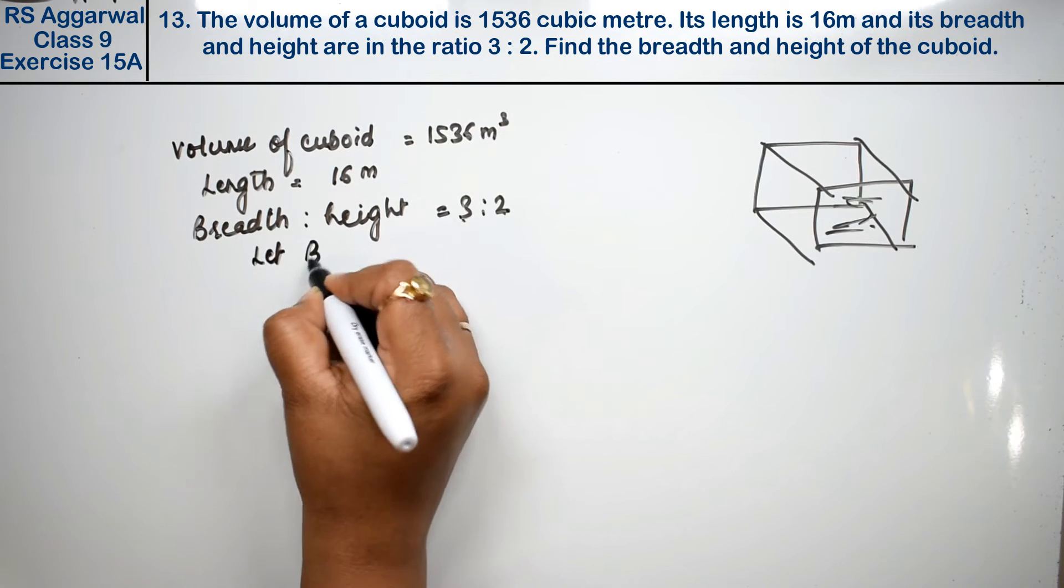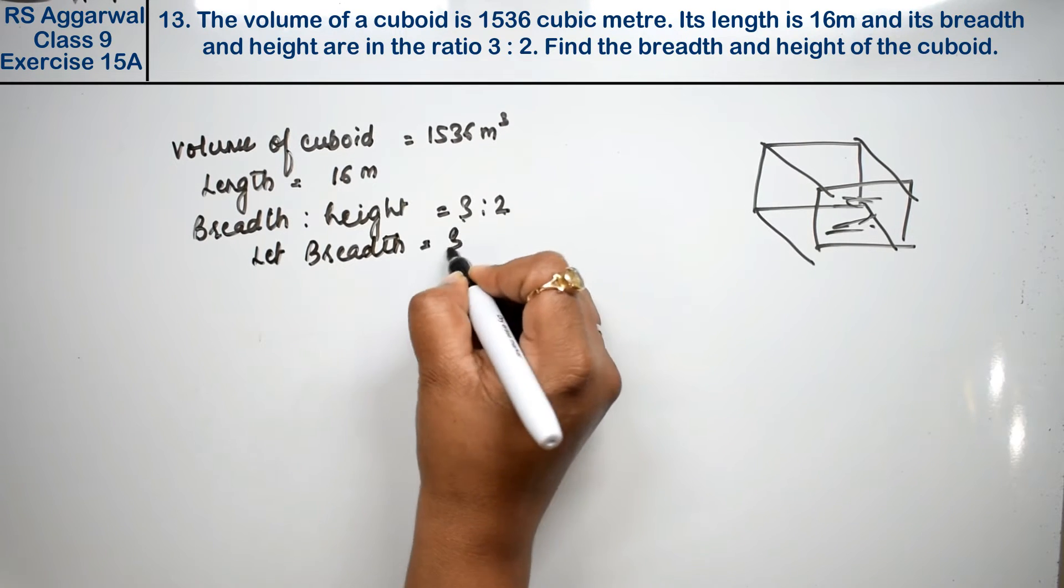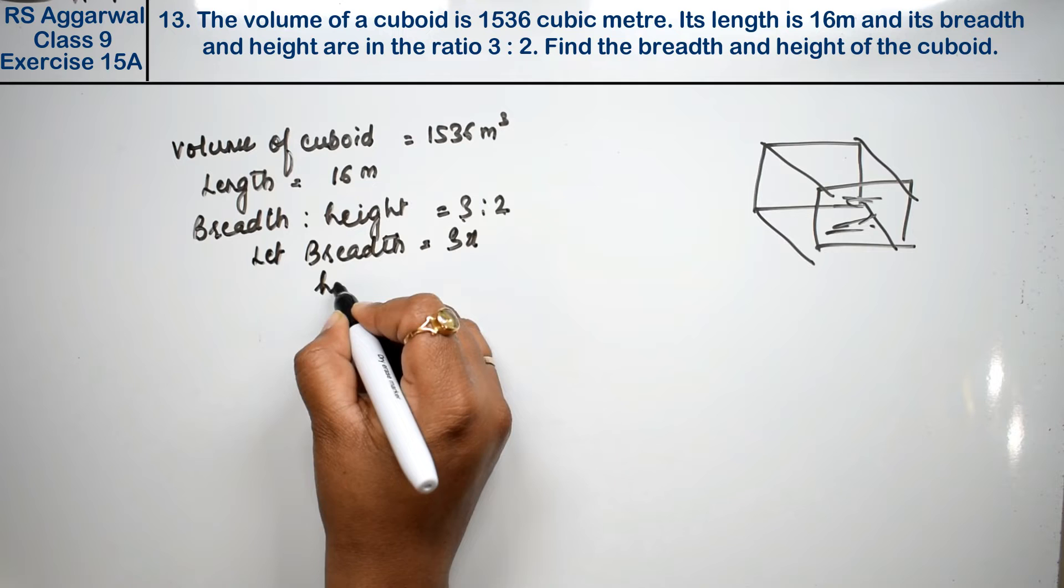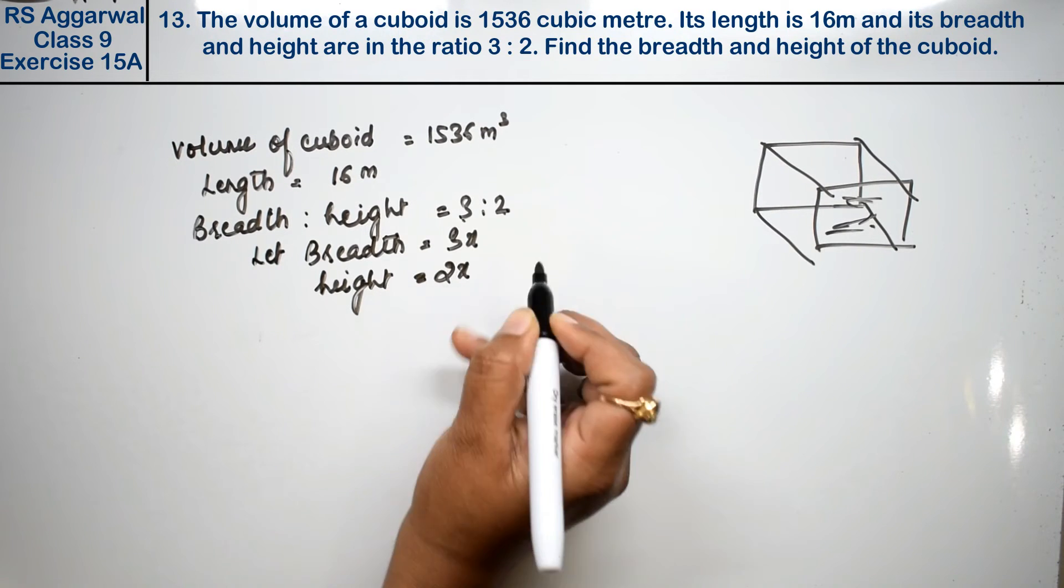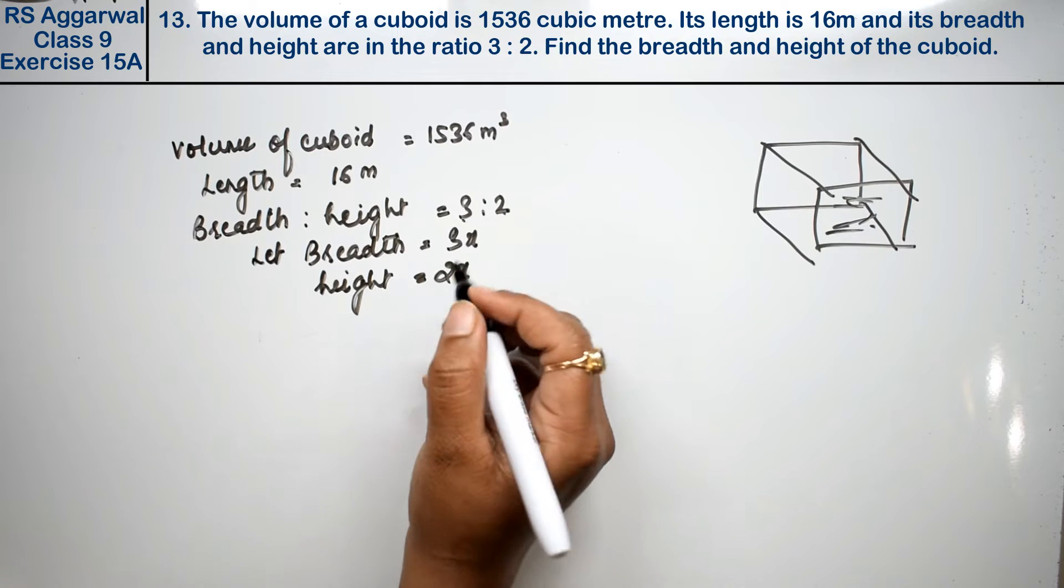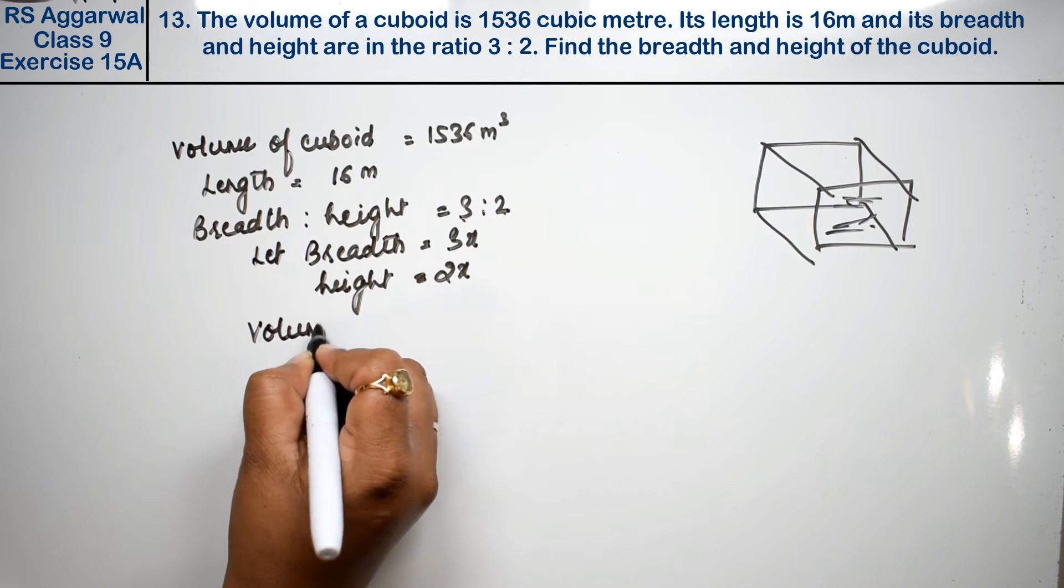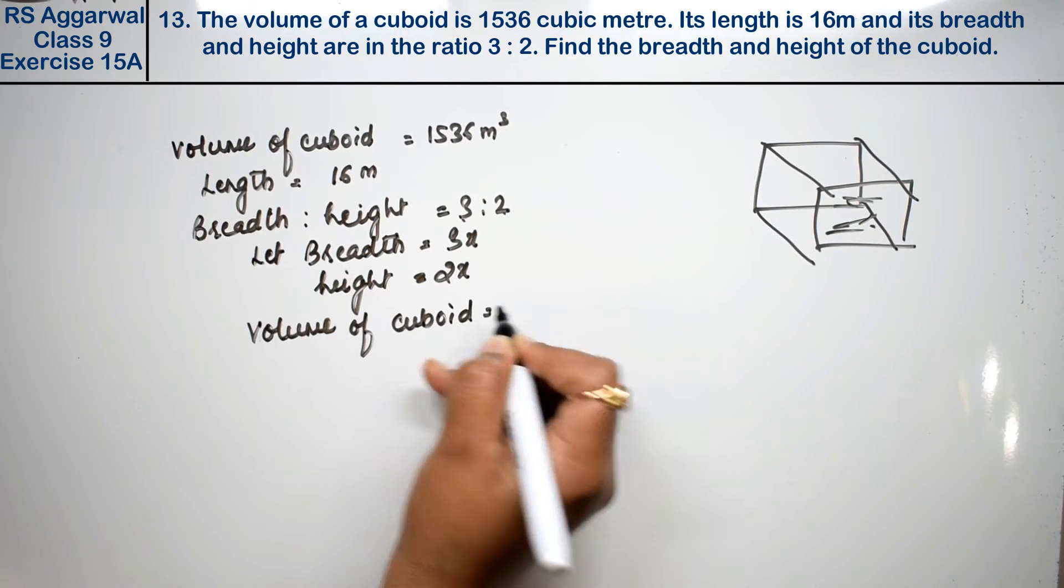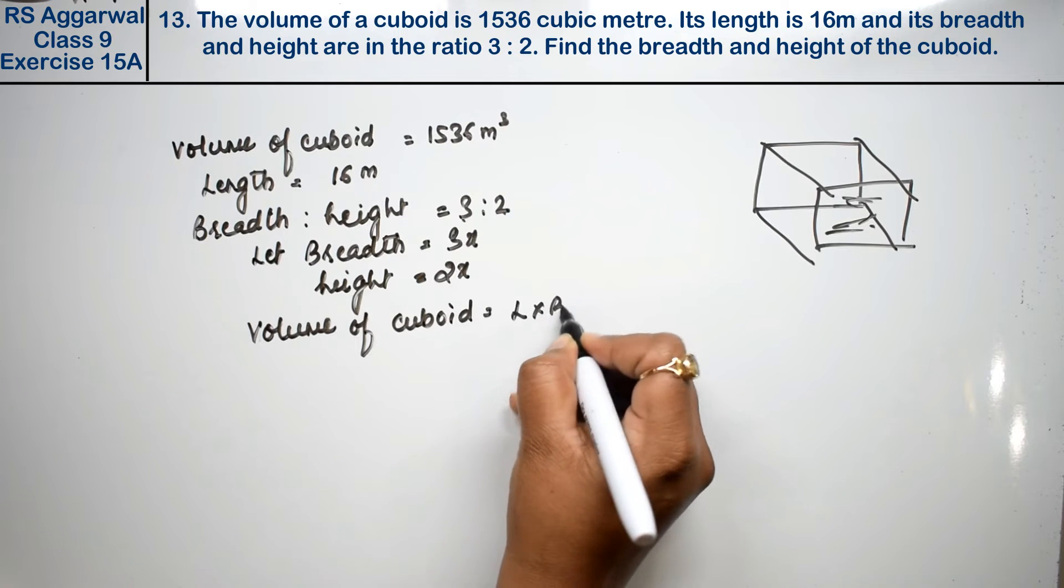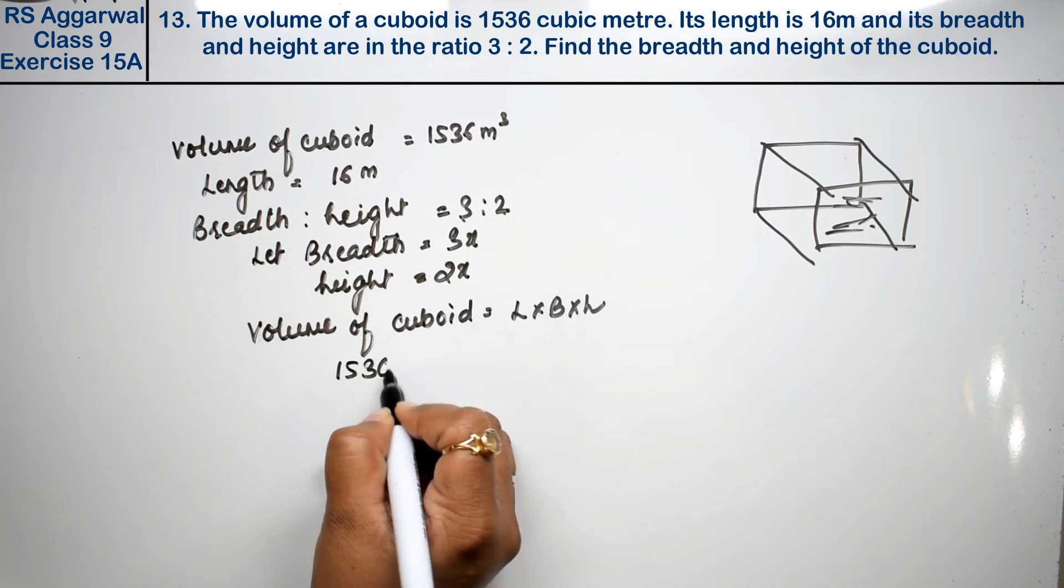Let breadth equals 3x and height equals 2x. Now we will solve this. We will have volume. We will have the formula: volume of cuboid equals length into breadth into height.